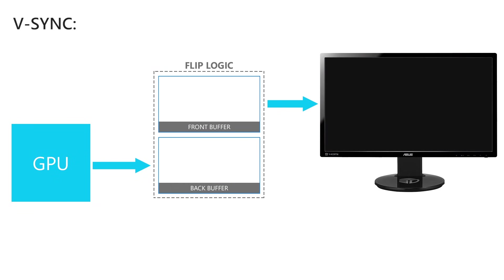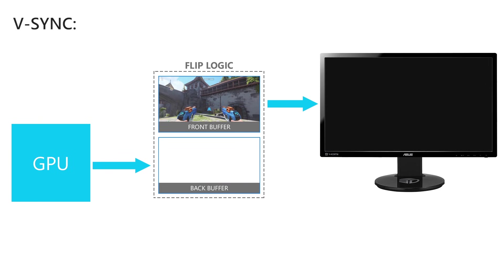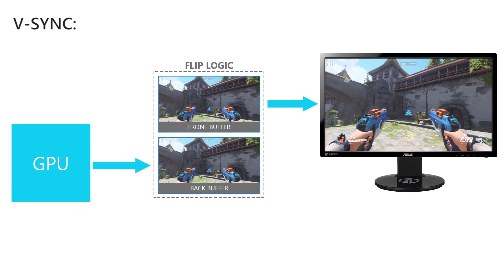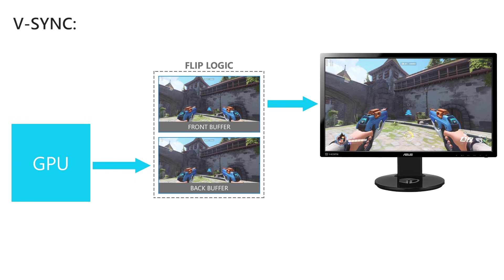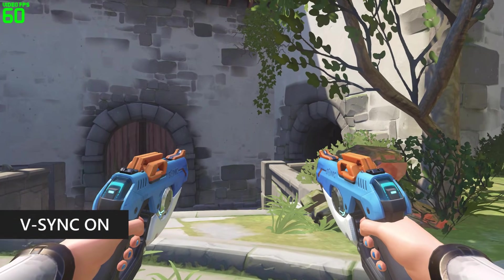VSync is a technology that fixes this issue by simply not allowing the buffers to swap until the frontbuffer has been scanned. So the GPU renders the frame into the backbuffer, which then becomes the frontbuffer, and the frontbuffer becomes the new backbuffer into which the GPU renders the next frame. We wait for the next scan of the frontbuffer to happen, which sends the image to the monitor. After that the buffer swap happens, the GPU renders the next image to the backbuffer, and we wait for the next scan. As a result we get perfectly smooth motion.